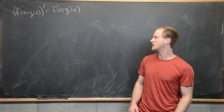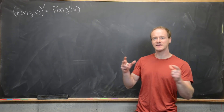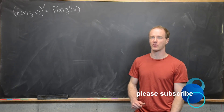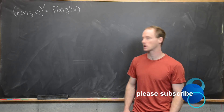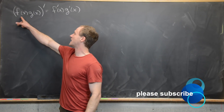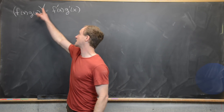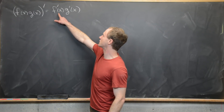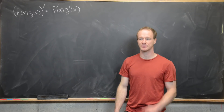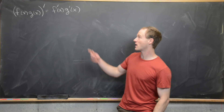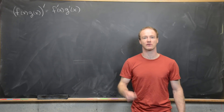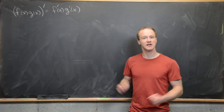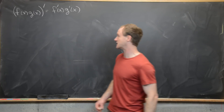In this video we're going to look at a pretty interesting question: when does the so-called freshman's dream for the derivative of a product of functions actually work? In other words, when is it true that we take f(x) times g(x) and take the derivative, and get the same thing as taking the derivative of f and the derivative of g and then multiplying them? We know that the product rule says this is in general not true, but maybe it is true for some choices of f and g. So let's explore to see if that is the case.